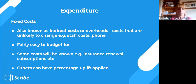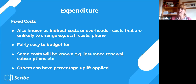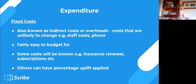On expenditure: firstly, fixed costs — possibly called indirect costs or overheads — are costs unlikely to change, such as your phone bill, staff costs, and salary. They're fairly easy to budget for. Some you'll already know: if you're tied into an insurance renewal deal you may know what your insurance cost is for next year and can simply add that against the line. Subscriptions you may know as well, and others can have a percentage uplift applied. These core fixed costs are often a large proportion of your council budget.